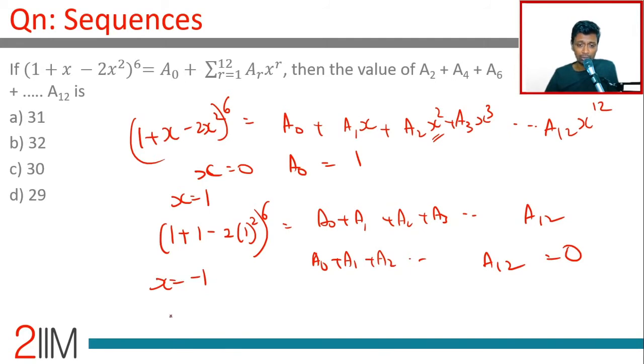Substitute x = -1: (1 - 1 - 2)⁶ equals A₀ - A₁ + A₂ - A₃ + A₄ all the way till A₁₂. This is (0 - 2)⁶ which is 2⁶ which is 64.